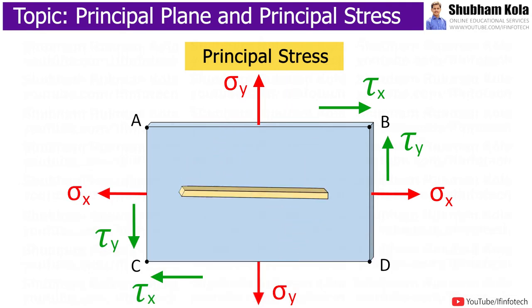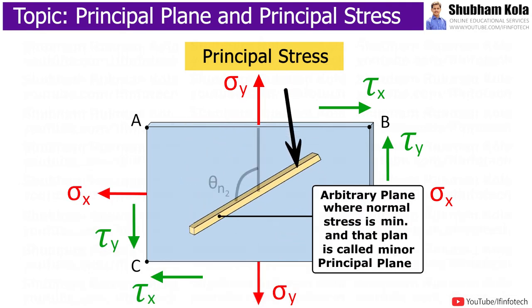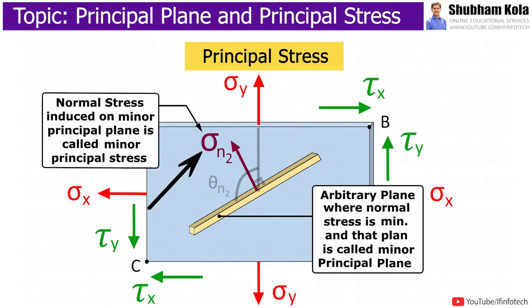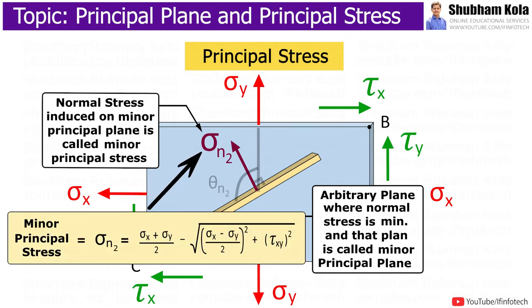Similarly, at certain angle of theta, we have a plane which carries minimum normal stress, and that plane is called as minor principal plane. And normal stress induced on that plane is called minor principal stress. And minor principal stress, that is sigma n2, is calculated by this formula.